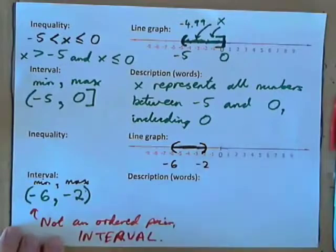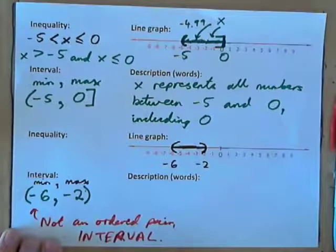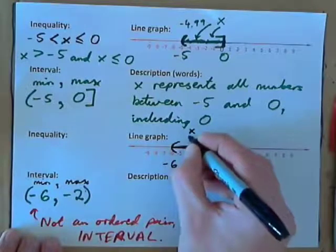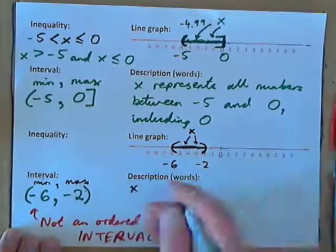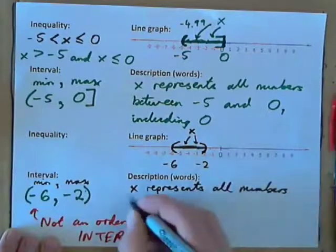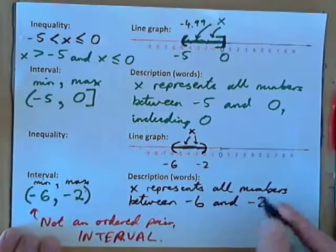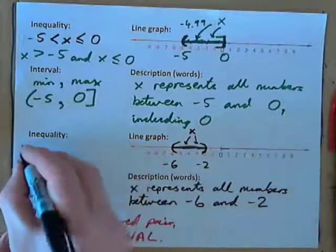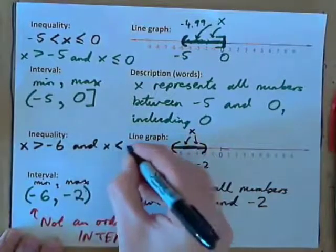The description: all numbers between negative 6 and negative 2. Or, using a variable x: x represents all numbers between negative 6 and negative 2 — not including negative 6 and not including negative 2. As two separate inequalities: x is greater than negative 6, and x is less than negative 2.